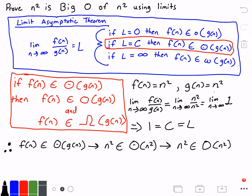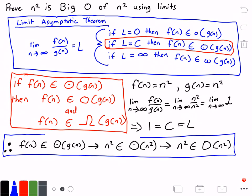And that is our answer. We are done proving that N squared belongs to Big O of N squared.